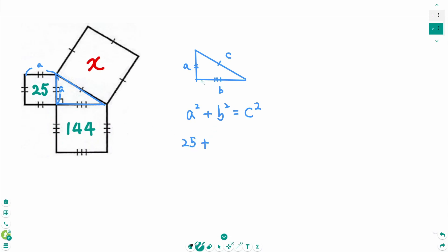And this side is B. So this one is B. Then B squared means the area of the middle square, which is 144.